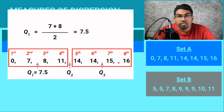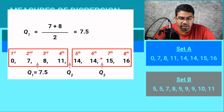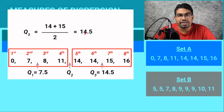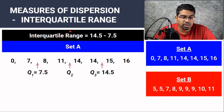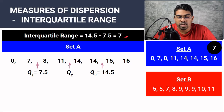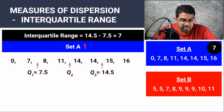And the third quartile will be the average of 14 and 15, which is 14.5. Once we have Q1 and Q3, first quartile and third quartile, then we can find the interquartile range. Interquartile range is simply 14.5 minus 7.5, which gives us 7. So the interquartile range for set A is 7.